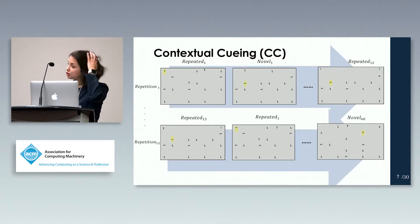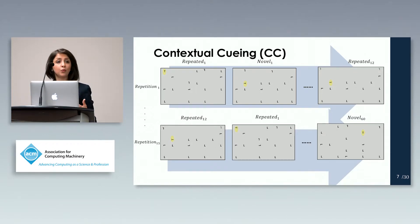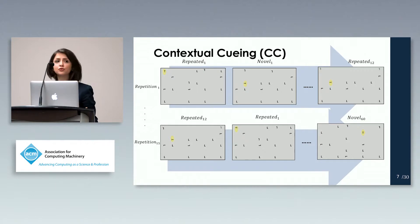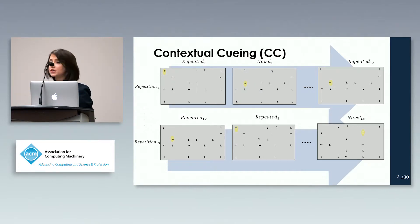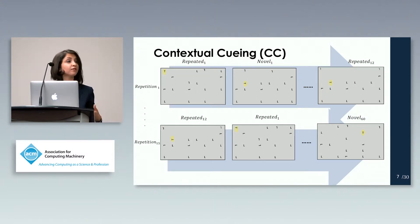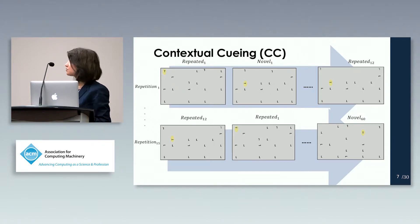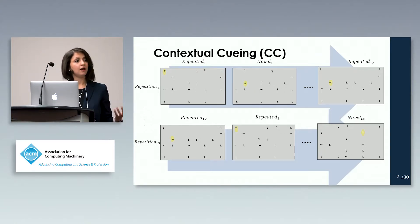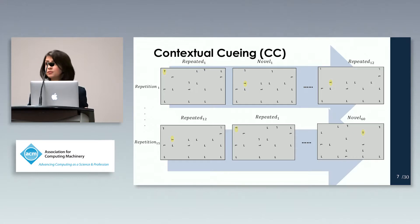In a traditional contextual cueing task, users are provided with some repeated displays wherein the location of items is preserved. The user's task is to find a T letter among L letters. There are also novel displays with completely random arrangements. These displays are shown to users for 15 repetitions; however, learning happens after the fourth repetition. Interestingly, this is completely implicit — when users are asked whether they found any repetition, they are not aware of it. This is completely unconscious.